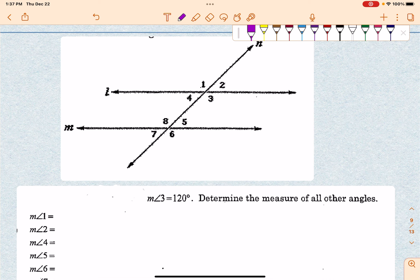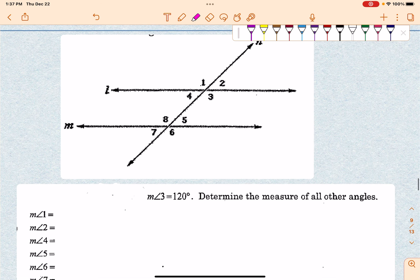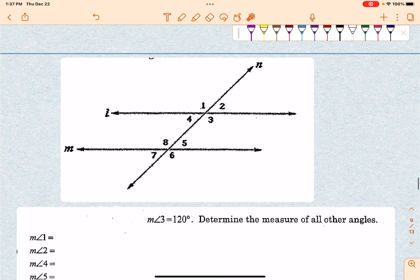So as we talked about in our last video, we know that if I look at these two, if line L and M are parallel, then this line right here, which is line N, is going to be our transversal.